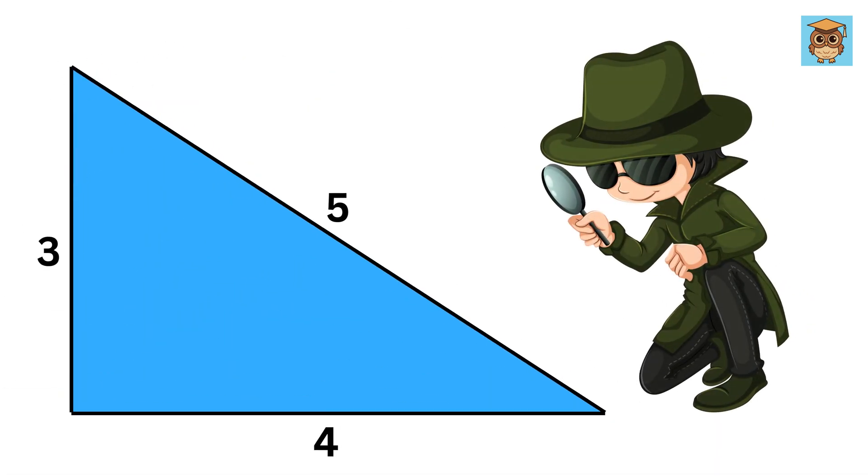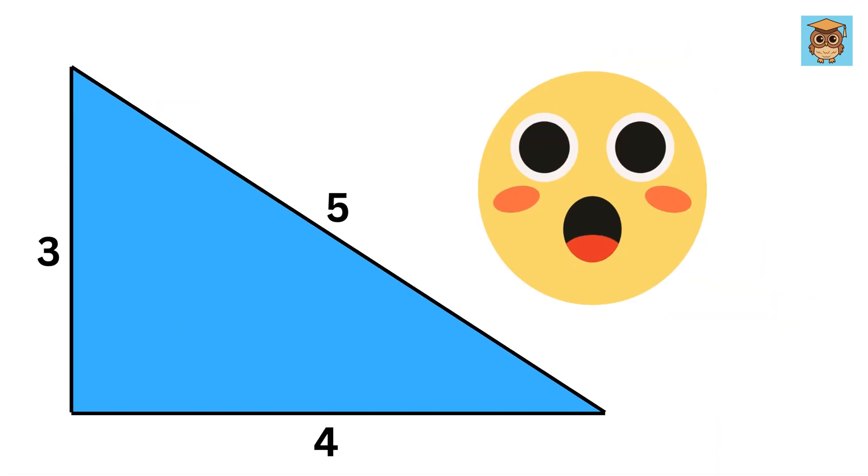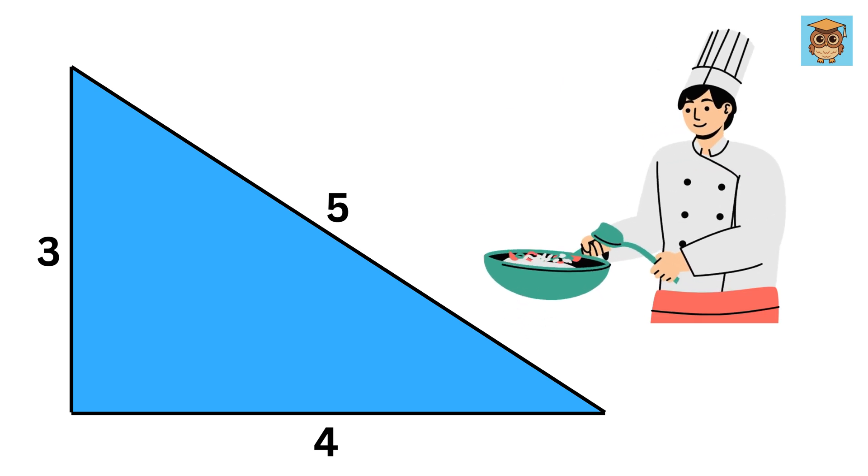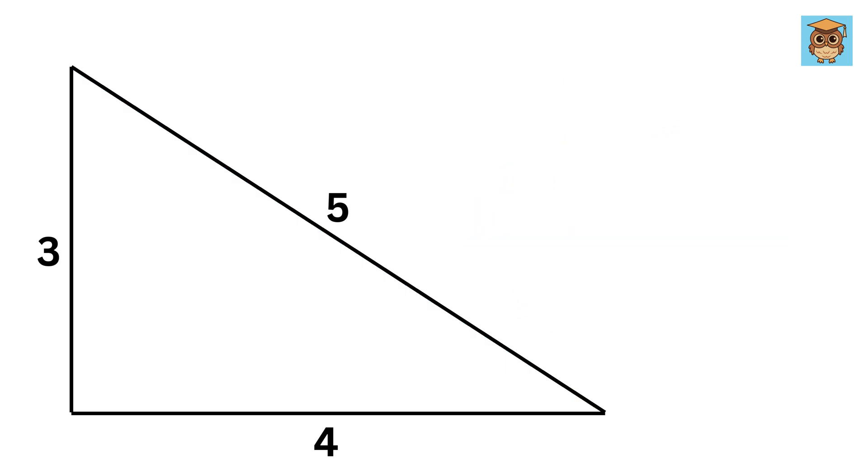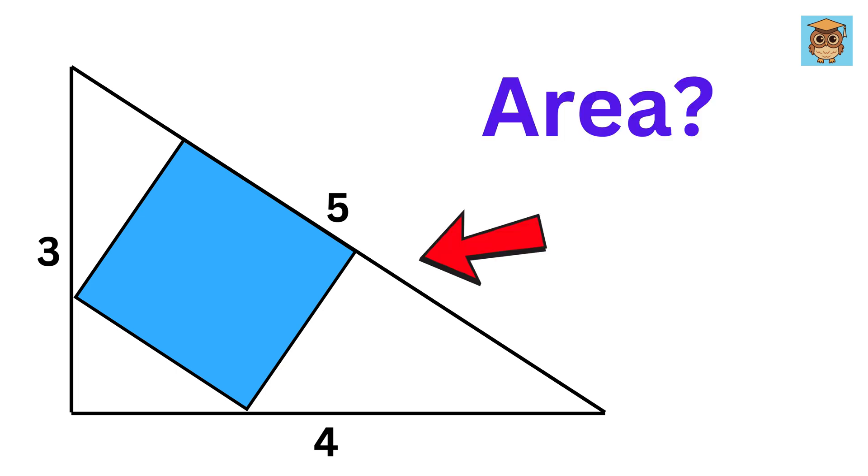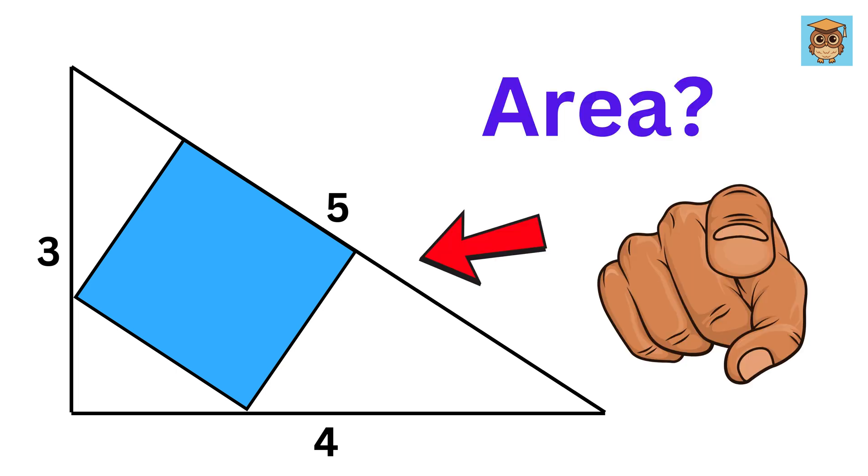Whenever I look at a 3, 4, 5 right-angled triangle, I become very much excited, because I know something interesting is cooking up. Today we have this triangle, and inside this triangle we have a square. Our job is to find the area of this square. So, can you figure it out?